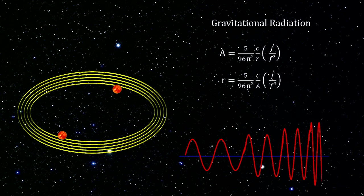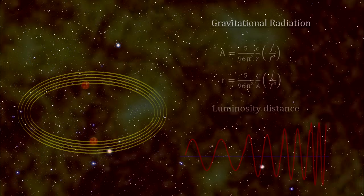If we can also measure the amplitude, we can even calculate the distance to the binary system. Because this distance is based on gravitational wave luminosity, it is called the luminosity distance. For most all gravitational wave sources, this will be the only way to figure out how far away they are.